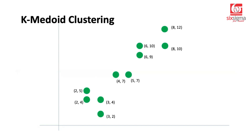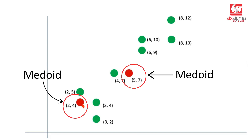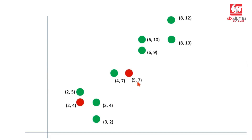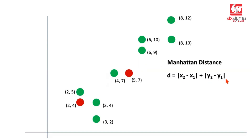How do we start K-medoids clustering? Imagine a two-dimensional Cartesian plane with all these points — we've taken a total of 10 points, and let's say we want to form two clusters. We begin by selecting two points randomly; in our case, we chose 2,4 and 5,7. Now we have to calculate the distance of every other point with respect to both medoids. This distance is preferably the Manhattan distance, which is the absolute differences added up across both axes.